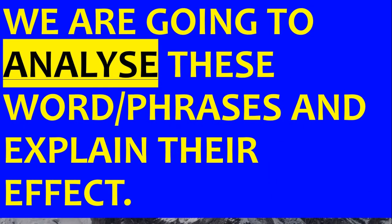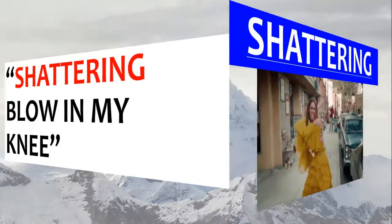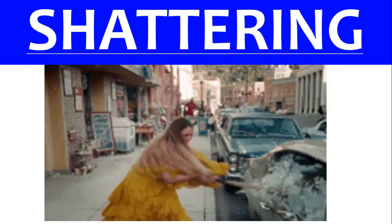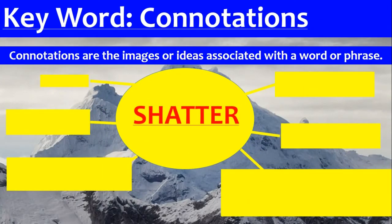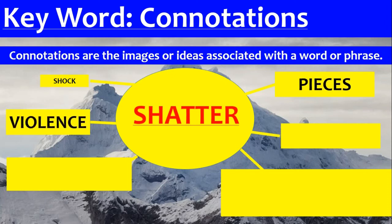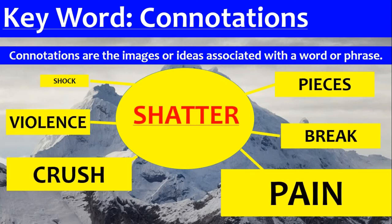Now let's analyse these words and phrases and explain their effect. The first quote is 'shattering blow in my knee' — zooming in on the verb shattering. Connotations are the images or ideas associated with a word or phrase. For shattering I would link: shock, pieces, violence, break, pain, crush. The writer could have used 'hurt his knee,' 'injured his knee,' or 'broken his knee' — but he used shatter because he wants the reader to think of violence, pain, and crushing.